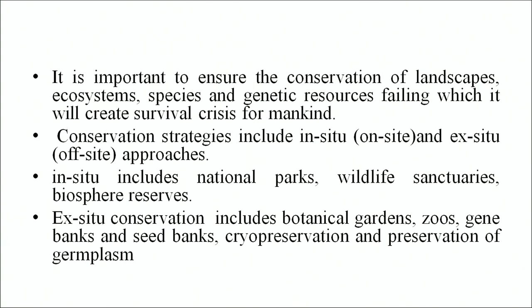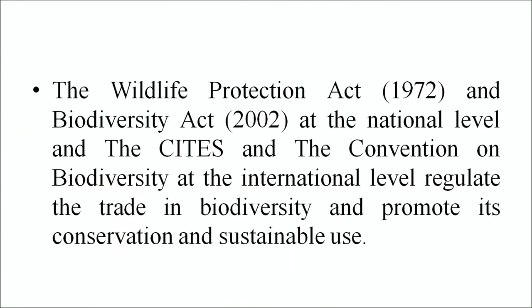It is important to ensure the conservation of landscapes, ecosystems, species and genetic resources, which will otherwise create a survival crisis for mankind. Conservation strategies include in-situ and ex-situ approaches. In-situ includes national parks, wildlife sanctuaries, biosphere reserves, etc. Ex-situ conservation includes botanical gardens, zoos, gene banks, seed banks, cryopreservation and preservation of germplasm. The Wildlife Protection Act 1972 and Biodiversity Act 2002 at the national level, and CITES and the Convention on Biodiversity at the international level, regulate trade in biodiversity and promote conservation and sustainable use. The key objectives of this lesson are conservation of biological diversity, sustainable use of biodiversity, and fair sharing of benefits from utilization of genetic resources. Save biodiversity and protect the mother earth. This is all about lesson 15 — biological diversity or biodiversity conservation. We will meet you again with a new program of environmental science. Thank you.